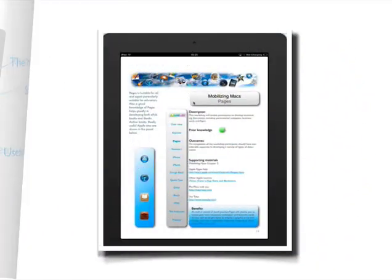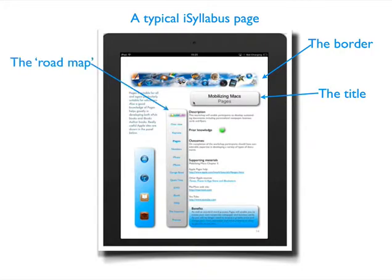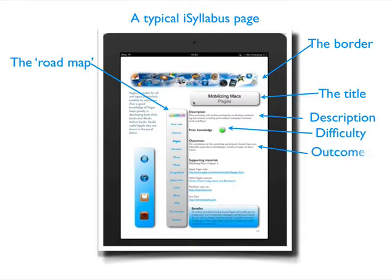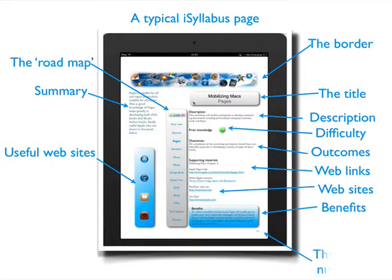Let's look at another one. This one is for Pages. Here we have once again the border, the title, the roadmap — and you should be able to see we're now in Pages. We have a description, difficulty, the outcomes, web links, websites, benefits, summary, useful websites, and finally the page number.